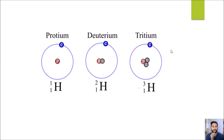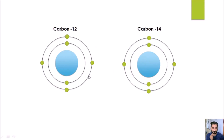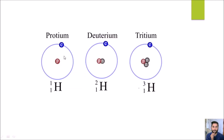The third isotope is called tritium. There is another addition of a neutron, and because of that, the mass becomes 3. When you add protons and neutrons together, you have the mass number, which is 3, and the atomic number remains the same because of the same proton number, which is 1. So we have three isotopes: protium, deuterium, and tritium.